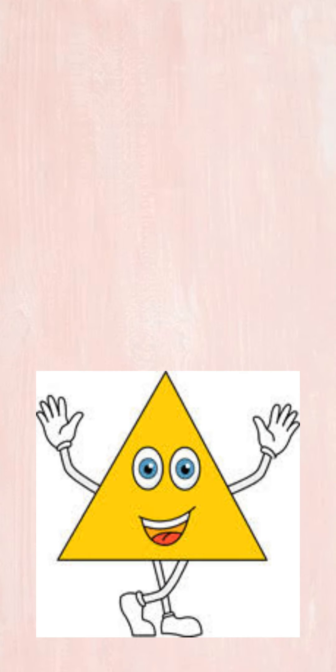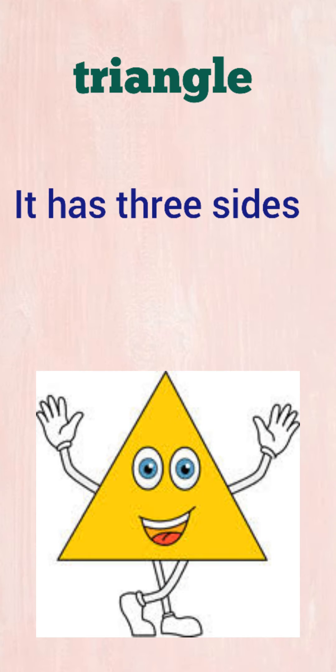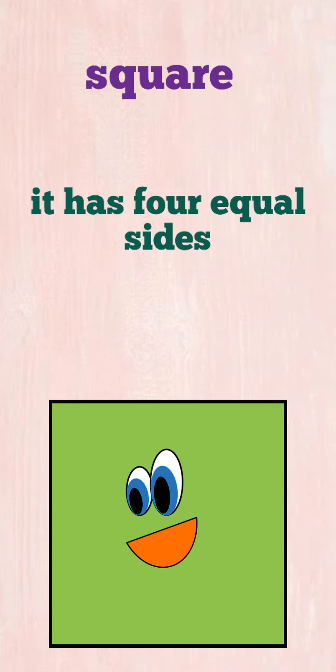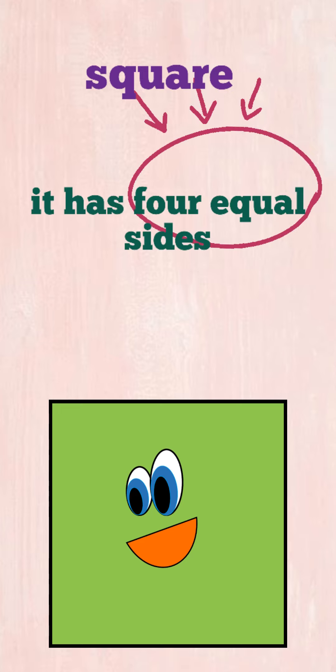Let's begin with a quick revision on shapes. Triangle — the triangle has three sides. Square — the square has four equal sides.